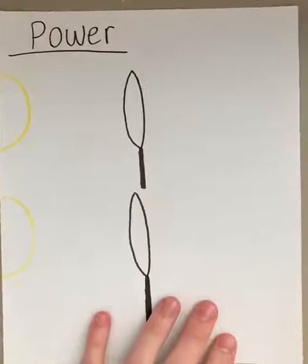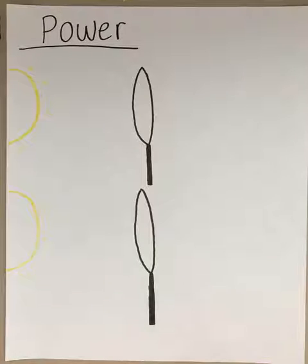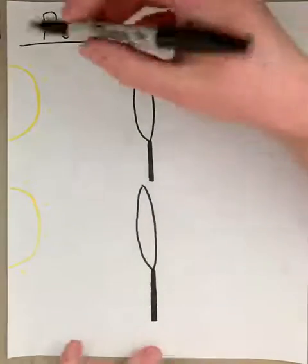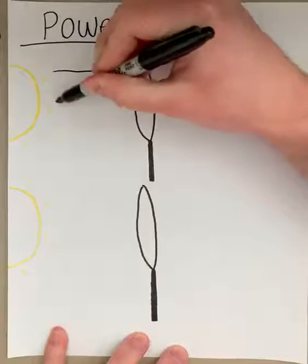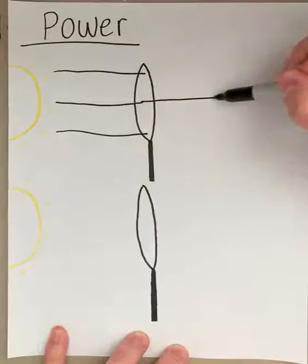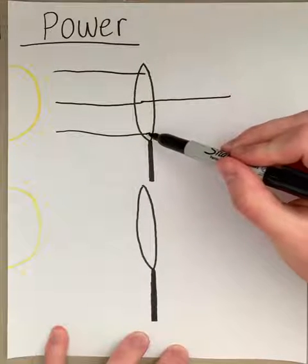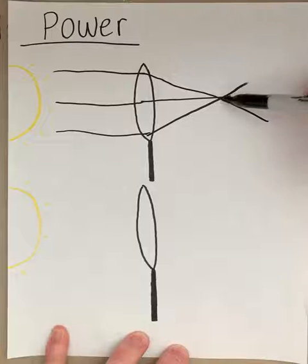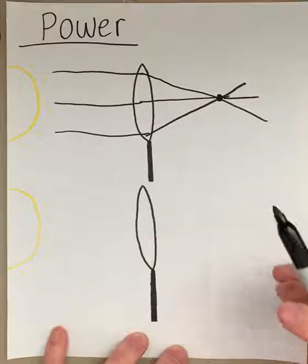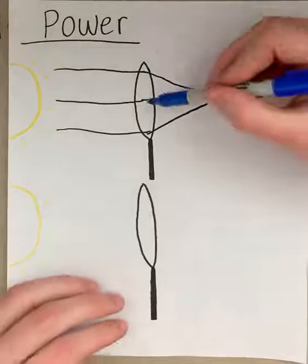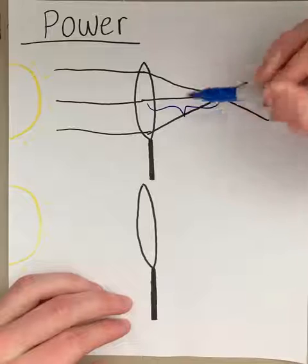You can see this principle when we talk about magnifying glasses. Here we have the sun shining onto a magnifying glass, and as the rays travel perpendicular and hit this converging lens, the axis line keeps going straight while the other lines converge to that focal point. The power of a magnifying glass is determined by that focal length.